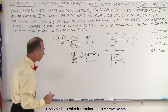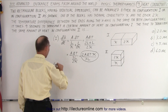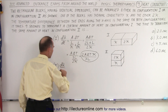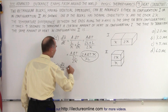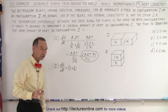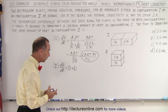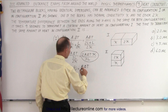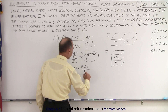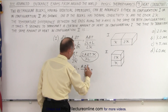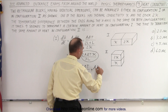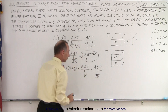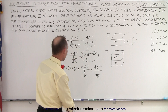Now we'll do the same for configuration 2. For configuration 2, we now have two possible paths. So dQ/dt equals the contribution from path 1 plus path 2 — we simply add them together. That gives us A·delta T divided by L over K, plus A·delta T divided by L over 2K.